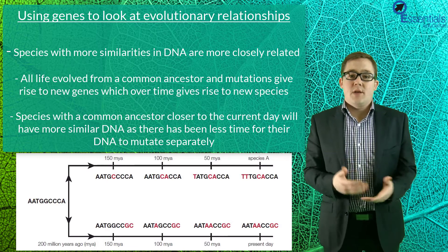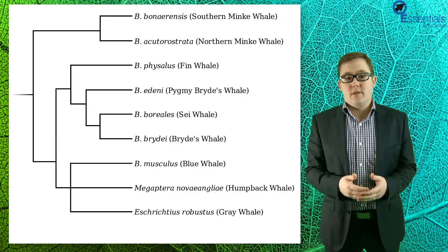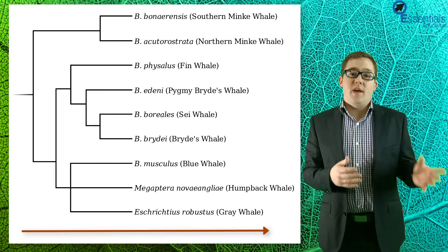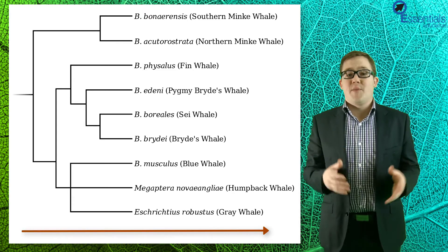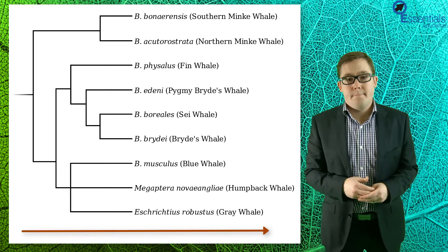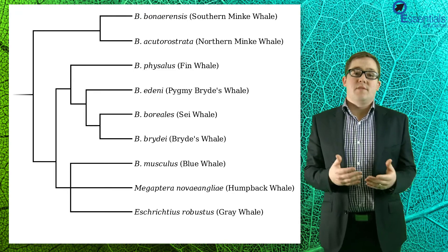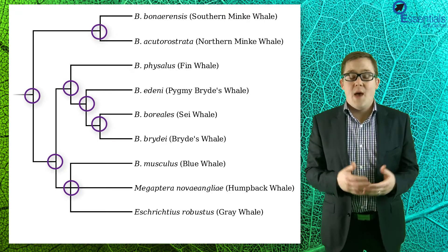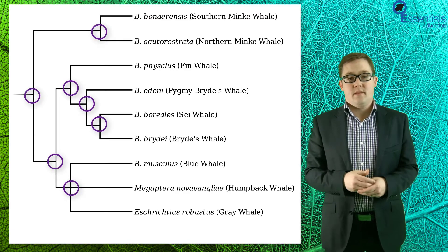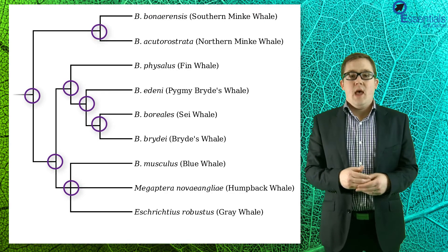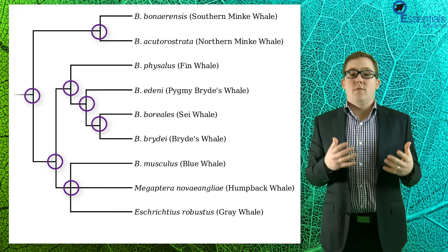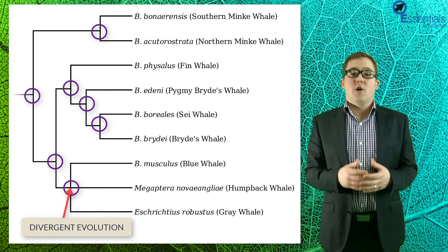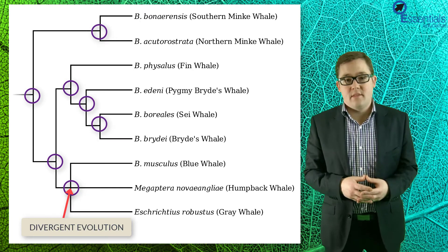These relationships can be seen on what's called phylogenetic trees, which generally run from left to right, with further left being further back in time. These trees give an indication of times in history where species broke off from their common ancestor and became new species. This type of split in evolution is referred to as divergent evolution, as the two new species diverge away from a common ancestor.